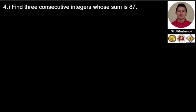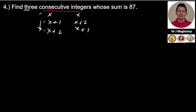If you recall from our first video on word problem fundamentals, if we read 'consecutive integers' with no 'odd' and no 'even' specified, our starting representation is x, x plus one, and x plus two, and so forth. Since we need three, that gives us three consecutive integers. If it were three consecutive even or odd integers, we would write x, x plus two, x plus four, and so forth.